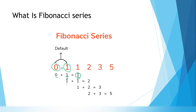So in the second iteration, one plus one is two. In the third iteration, my second number becomes the first number and my result becomes the second number — so one plus two gives three. Like this, the second number becomes the first number and the third number becomes the second number, and we keep adding first number plus second number to get the next result.